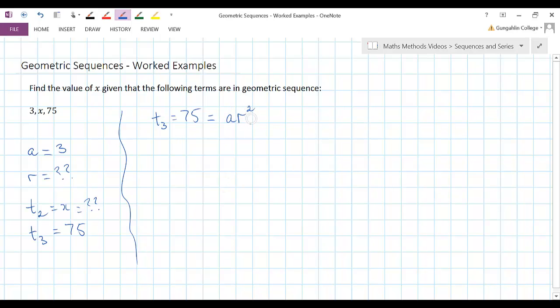I don't know what r is yet, but I do know that if I multiplied a by r squared I would have to get this third term, this 75. So let's have a look at that and see if we can work with it.